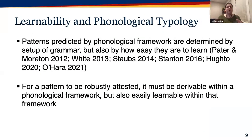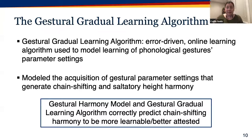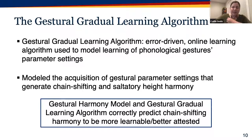The role of phonological learning and learnability in affecting typology is crucial here. For a pattern to be robustly attested, it must not only be derivable within a phonological framework, but also easily learnable. To examine learnability within the gestural harmony model, we introduce the gestural gradual learning algorithm — an error-driven online learning algorithm used to model the learning of phonological gesture parameter settings. Our modeling shows the gestural harmony model coupled with this algorithm correctly predicts that chain-shifting harmony should be more learnable and thus better attested than saltatory harmony.